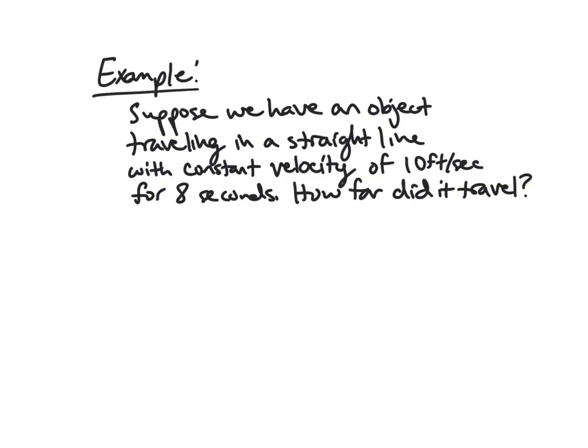So let's try to dig into this through an example. Suppose we have an object traveling in a straight line with constant velocity of 10 feet per second for 8 seconds. How far did this object travel? So should be able to figure out pretty quickly, 10 feet per second, I've got 8 seconds. It's going to be 80 feet. This is 10 feet per second times 8 seconds.